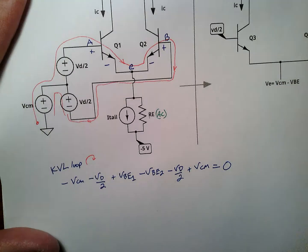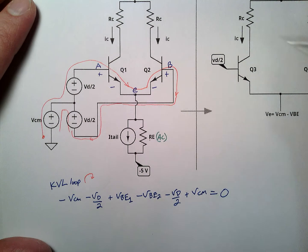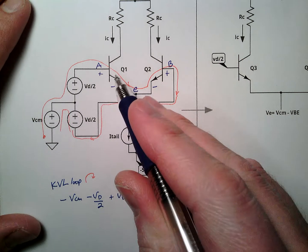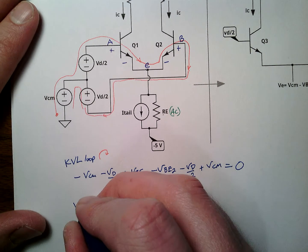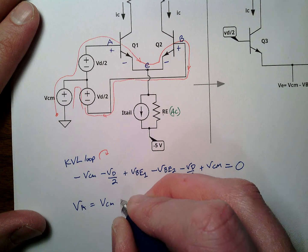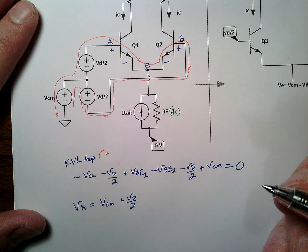Alright, what do we see here? Well, what is node VE? I'm not sure that this KVL was actually useful, alright? So we can say, I know that VA is VCM plus VD over 2, okay?